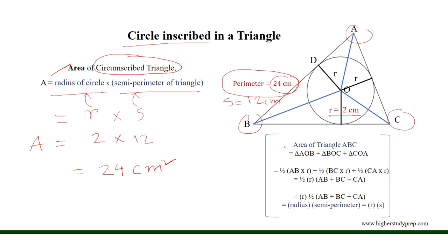Now, if we observe, we can see that the area of triangle ABC with respect to the in-center O is equal to the sum of the three triangles AOB, BOC, and COA respectively. The area of triangle AOB equals half of AB multiplied by the radius, where AB is the base for triangle AOB, and the radius OD equals R, which is perpendicular to side AB, where AB acts as the tangent for the circle inscribed above triangle ABC.